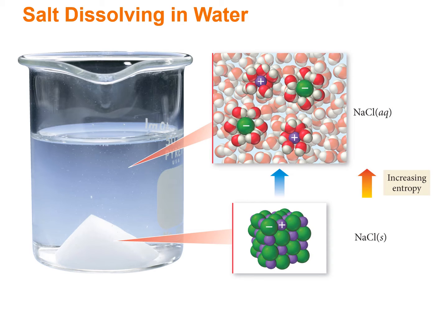Here we have solid sodium chloride dissolving in water. When it dissolves, the ions dissociate from each other, so you end up having sodium and chloride ions in solution. We start off with just one solid state where the ions are rigid, versus in solution they're random, surrounded by water molecules, moving around freely. So this is higher entropy.